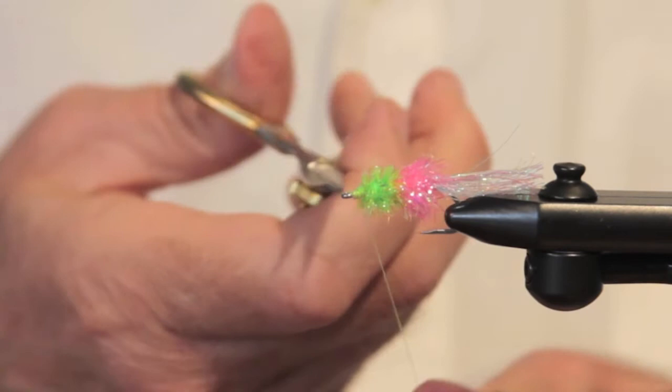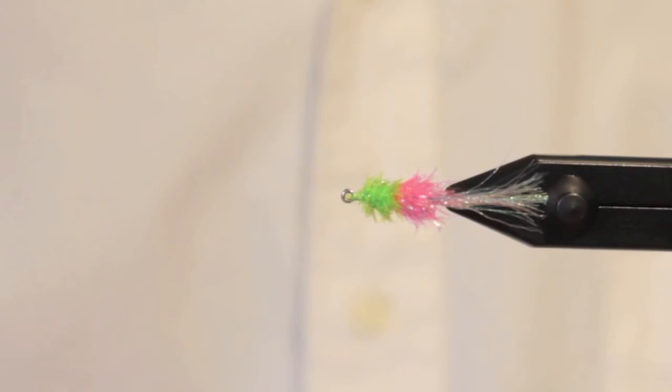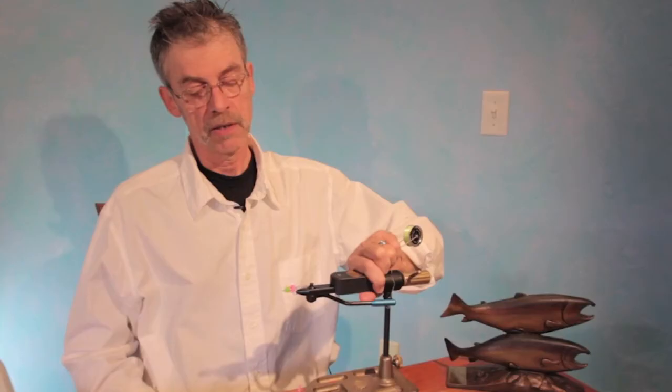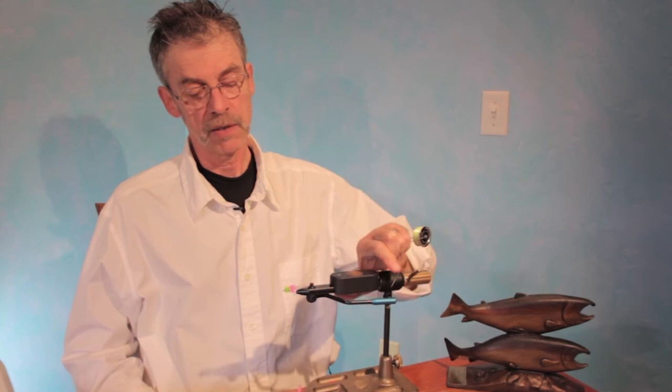And while you're tying up five or six dozen of these, you'll be dreaming about that trip to Alaska. Great Lakes, killer on the Great Lakes, Argentina, lower 48. There you go, the Kryptonite Spanker.